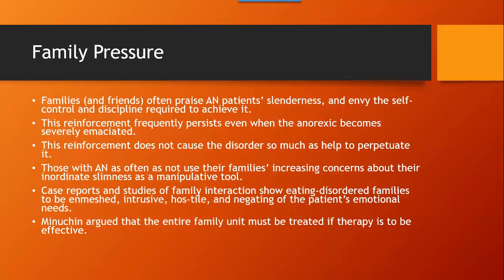Families and friends often praise anorexia patients' slenderness and envy the self-control and discipline required to achieve it. This reinforcement frequently persists even when the patient becomes severely emaciated. This reinforcement does not cause the disorder so much as help perpetuate it. Those with anorexia often use their families' increasing concerns about their inordinate slimness as a manipulative tool. Case reports and studies of family interactions show eating disorder families to be intrusive, hostile, and negating of the patient's emotional needs. It has been argued that the entire family unit must be treated if therapy is to be effective.